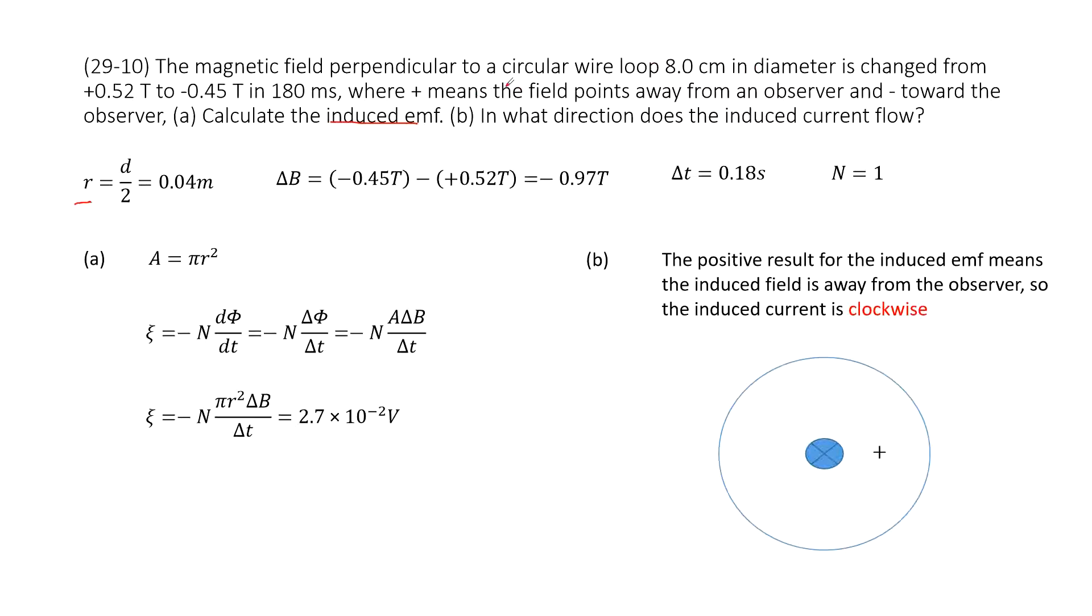And then the change of magnetic field is given. So we use the final magnetic field minus initial magnetic field. And time taken is given. And then how many turns of this loop? It tells you a circular wire loop.